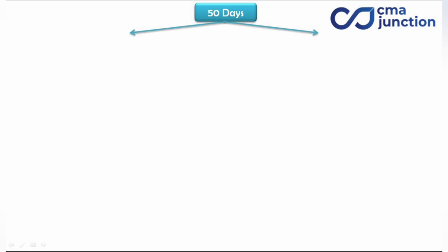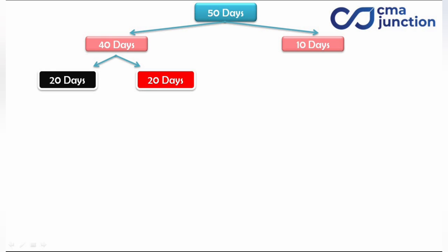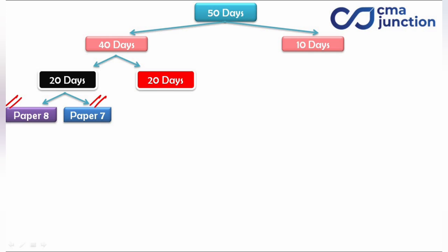We divide these 50 days into two parts: first 40 days and then 10 days. Within the first 40 days, we divide them 20 to 20. In the first 20 days, we have to do paper number 8 — Cost Accounting — and paper number 7 — Direct Taxation.